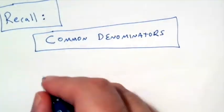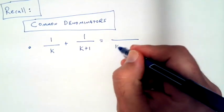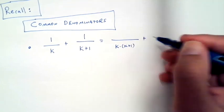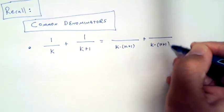Let's recall how getting a common denominator works. If we add 1 over k plus 1 over k plus 1, we get a common denominator of k times k plus 1.